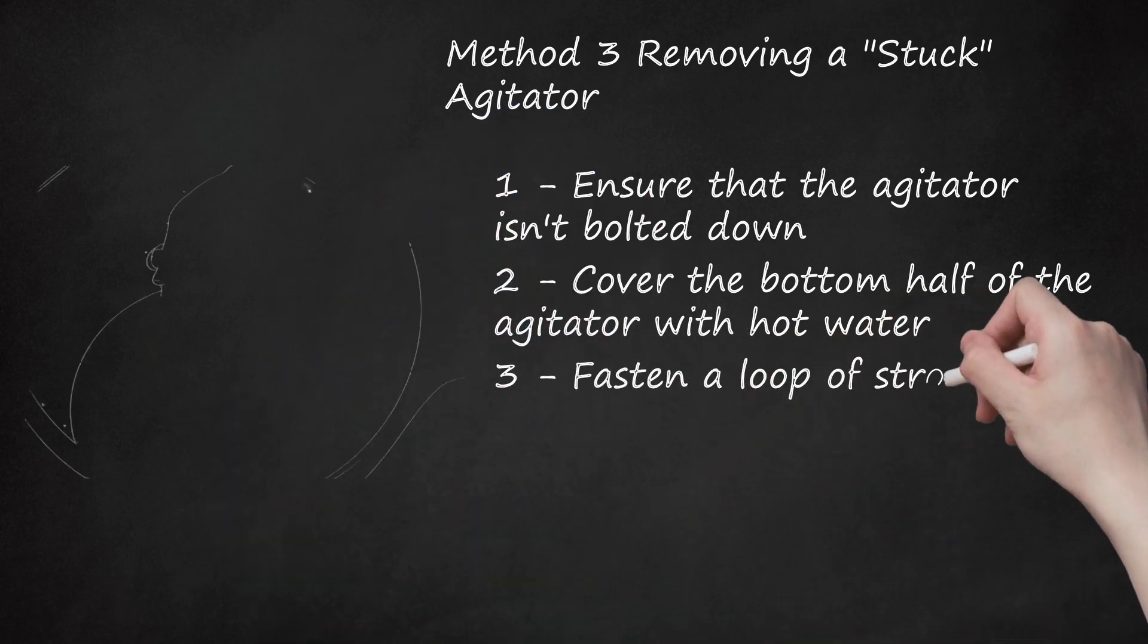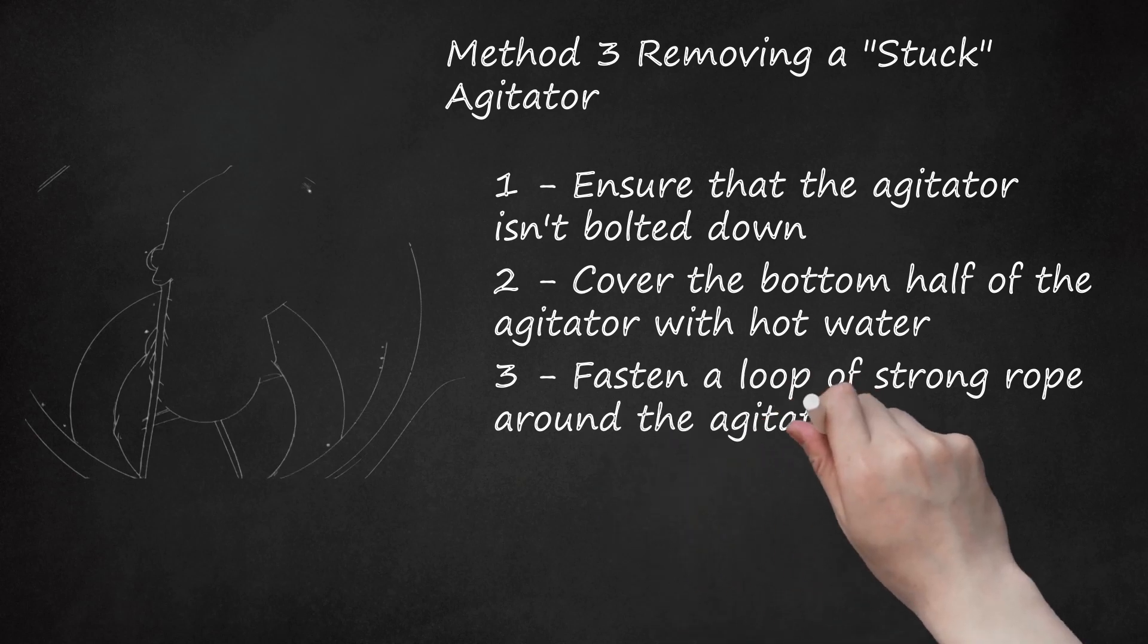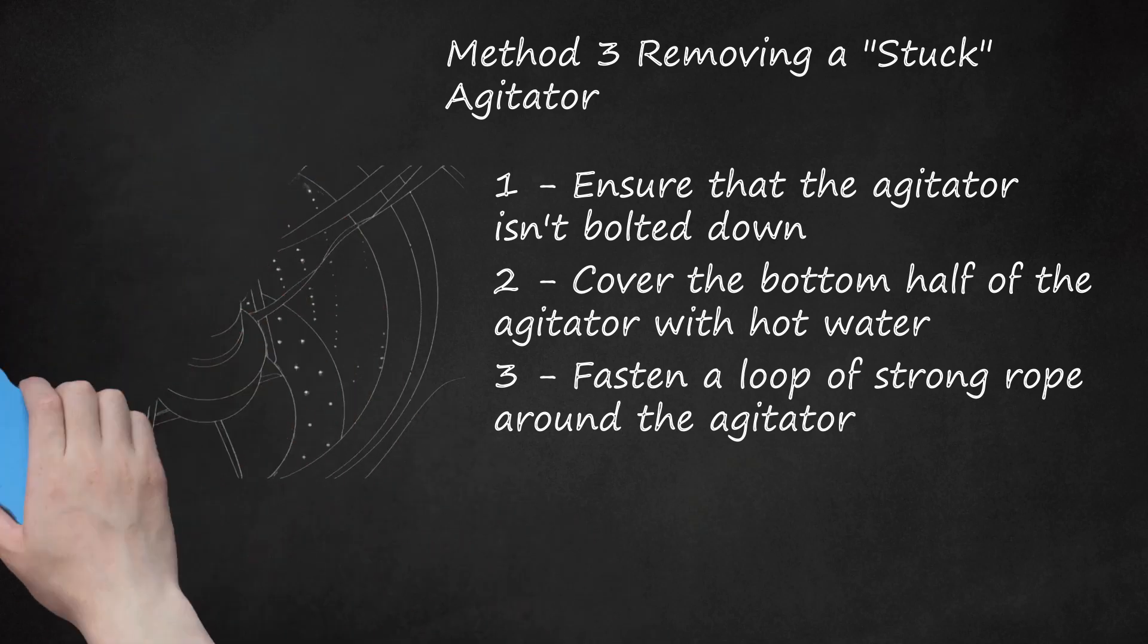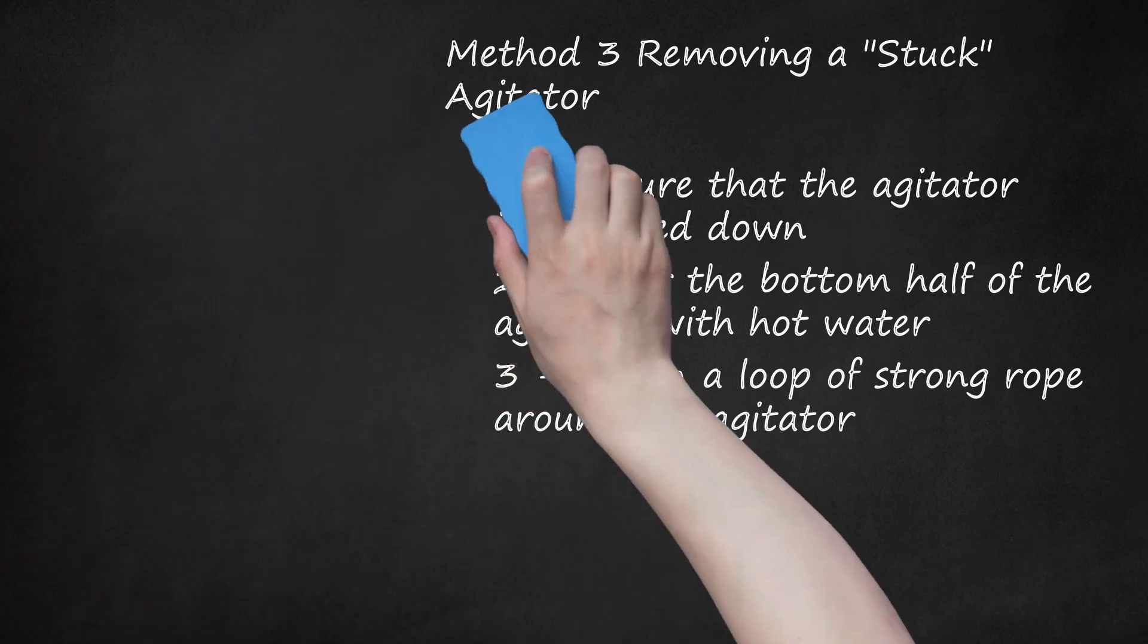Step 3: Fasten a loop of strong rope around the agitator. Grab a strong piece of rope about 5 feet, 1 and a half meters, long. Fold it over on itself at its midway point and loop it through itself to fasten it between the fins on the agitator neck. Give it a firm upward yank to tighten it and ensure it's secure. In a pinch, you can also use an old dryer belt for this task.